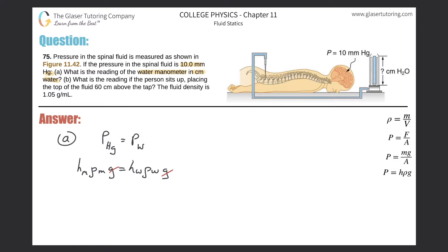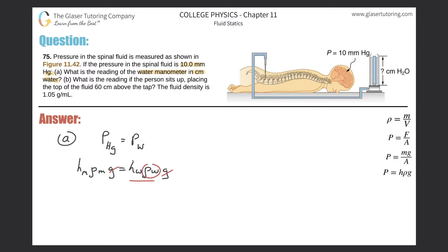What I'm left with is the simplified equation: height of mercury times density of mercury equals height of water times density of water. Since we want to find the reading of the water manometer in centimeters, we solve for height of water. Dividing both sides by density of water gives: height of water equals height of mercury times density of mercury divided by density of water.